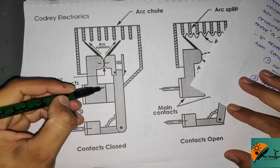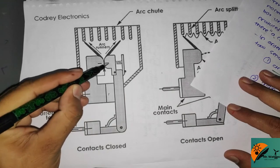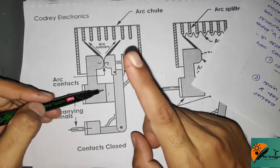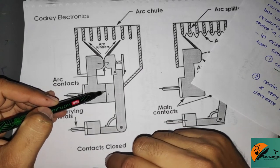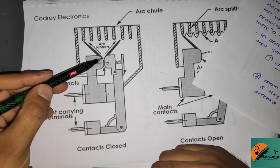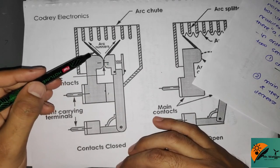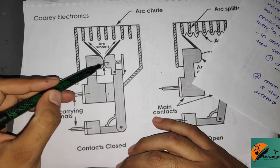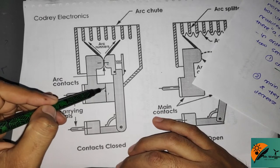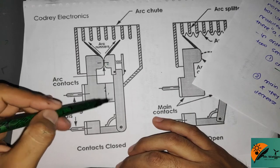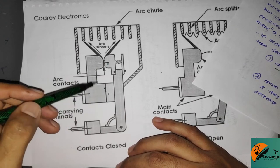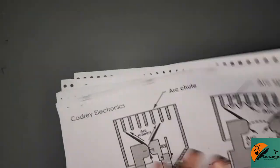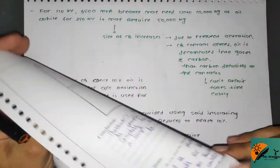In order to avoid damage, contacts are divided into two separate contacts: the first one is the arcing contact, and the other one is the main contact. The arcing contacts are made of copper alloy to withstand more heat. The main contacts are made of copper and plated with silver to decrease contact resistance. So this is the third type of air circuit breaker.